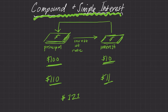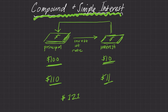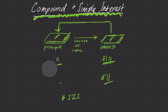At first glance this doesn't seem very significant — $120 versus $121. But if we look at a longer time period, or more compounding periods, compounding is just when we add the interest back on to the principal. The more and more this happens, the more and more we'll see the difference between compound and simple interest.